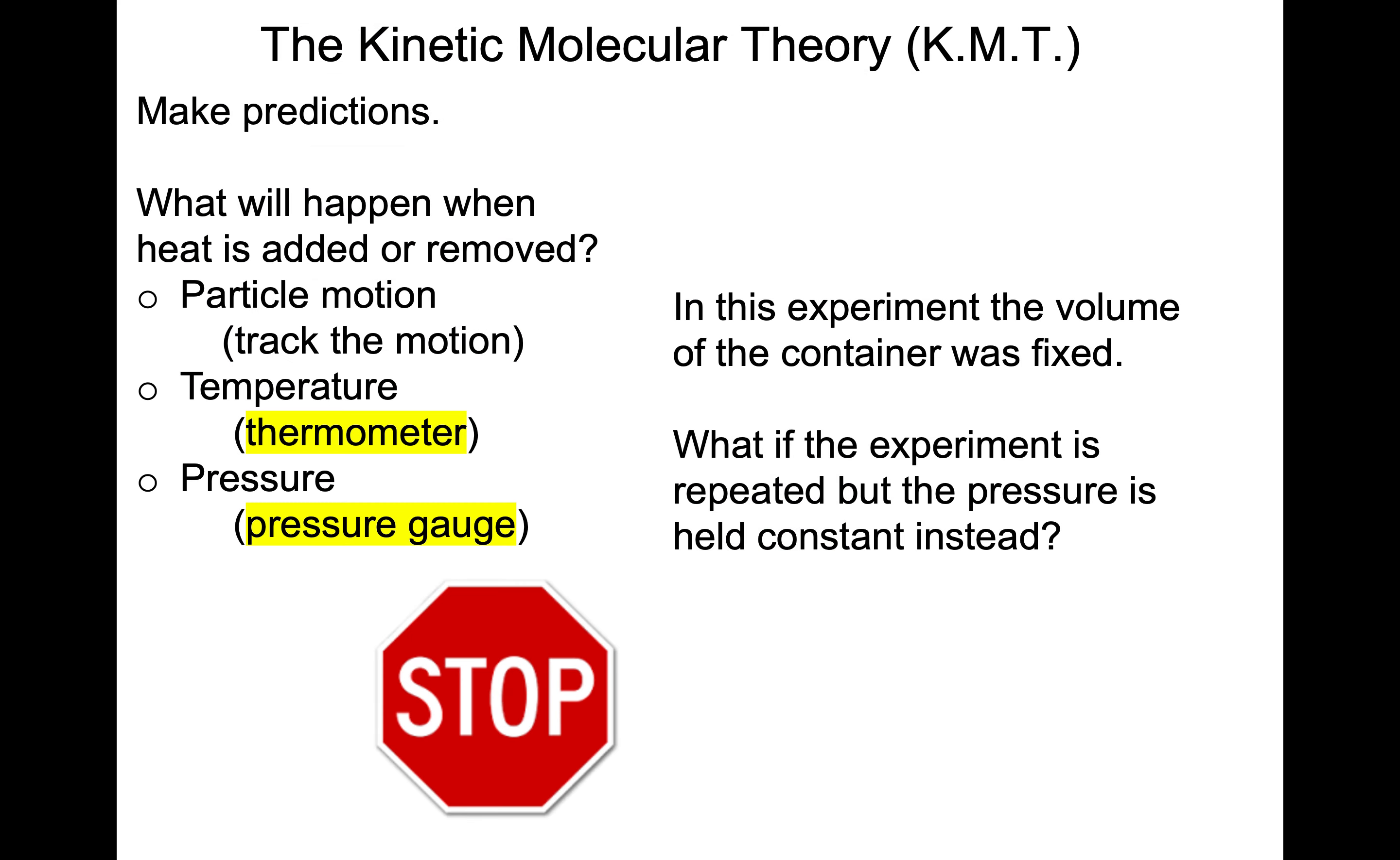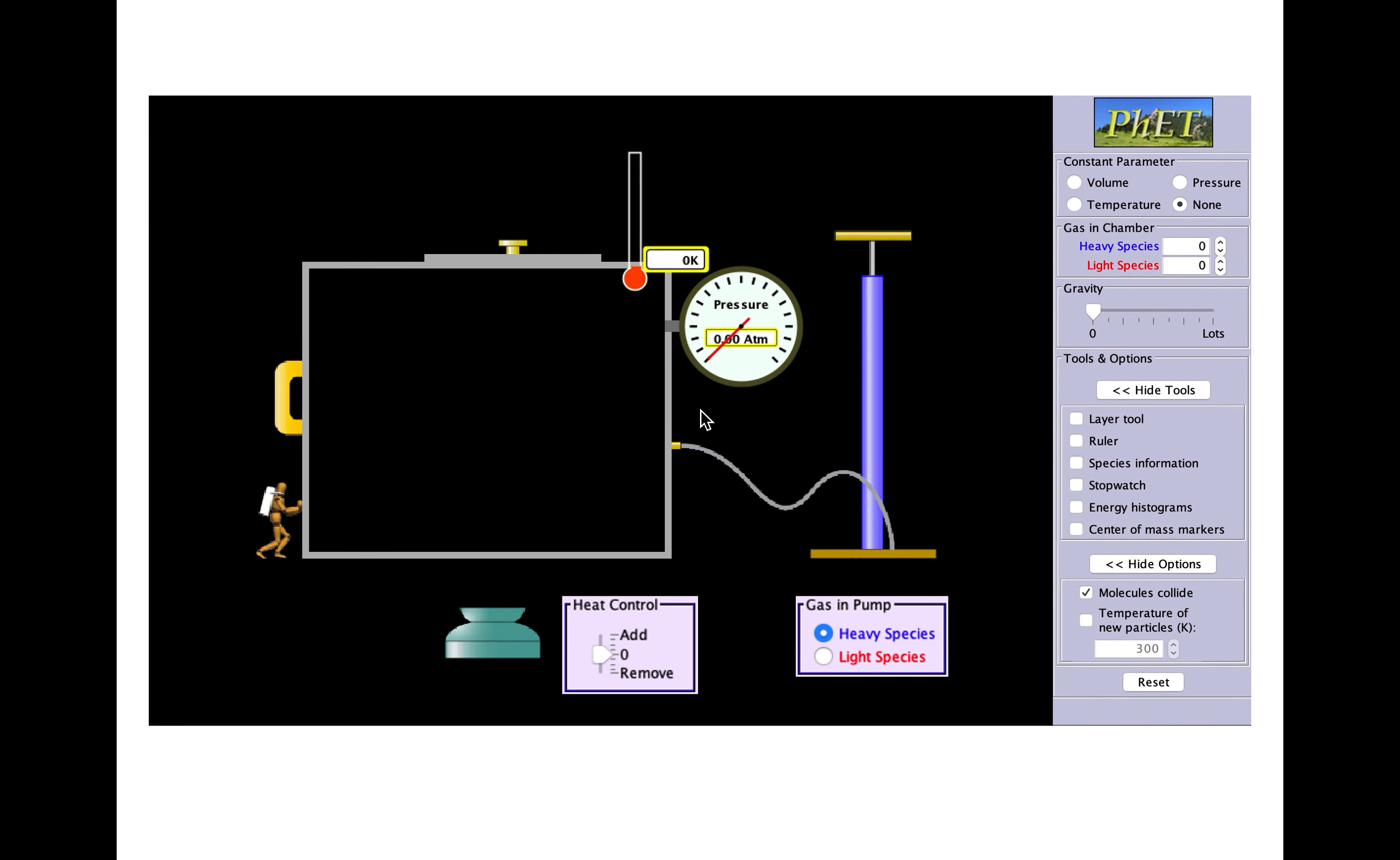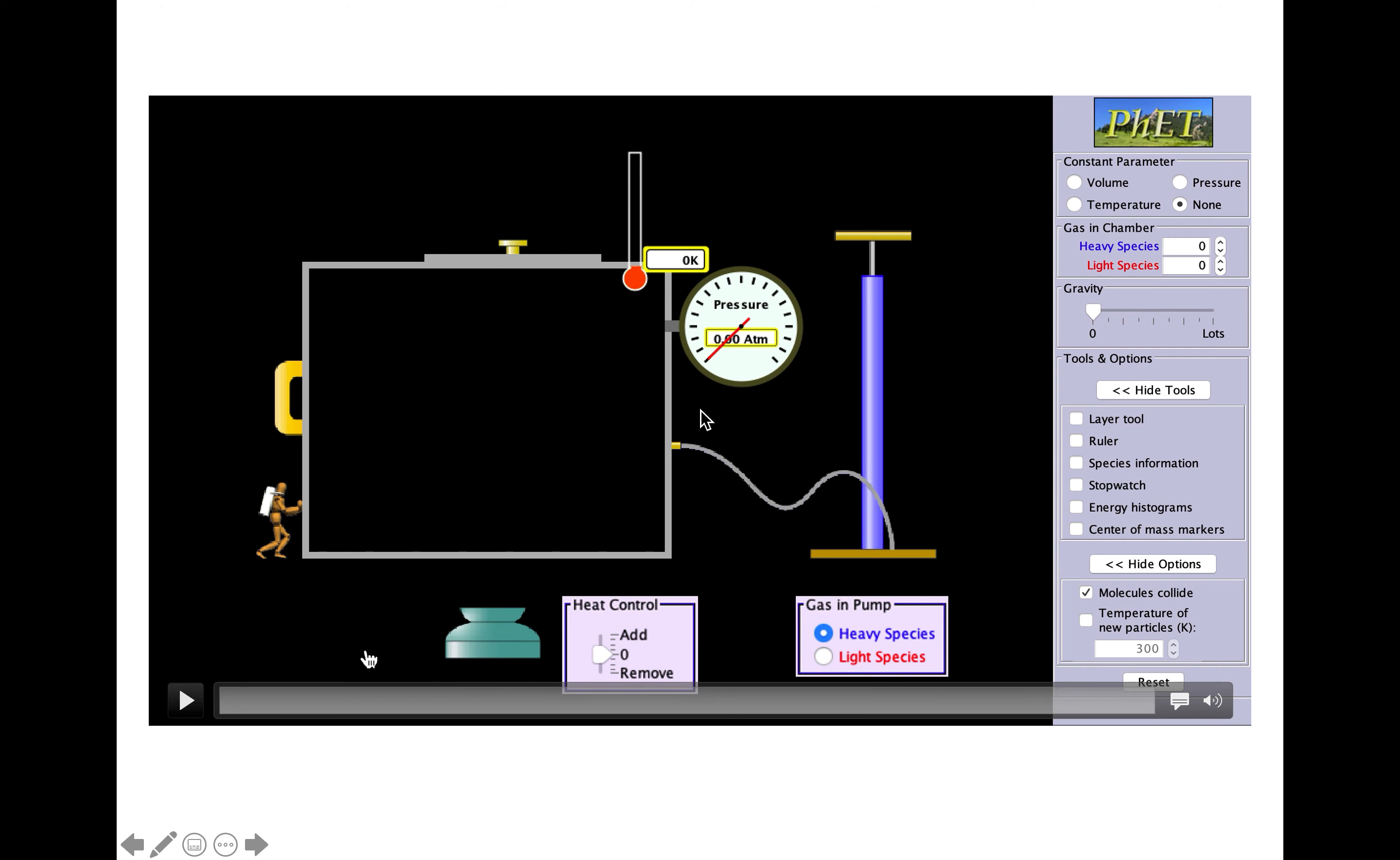If we think about both the thermometer and the pressure gauge, in this experiment the volume of the container was fixed. What if the experiment in the sim is repeated but the pressure is held constant instead? What do you predict then? Let's give that one a try. Let's test your prediction.